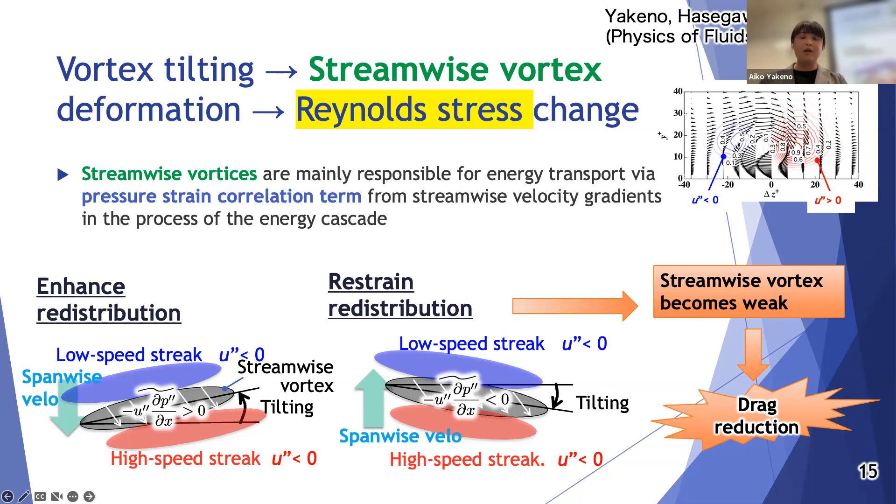That is the streamwise vortex shooting naturally without control. As you know the streamwise vortices are mainly responsible for energy redistribution via pressure strain correlation term, because the streamwise vortex is shooting in the spanwise direction with inclination a little bit upward. When the wall oscillation generates the Stokes layer, the streamwise vortex is forced to be tilted to the other direction.